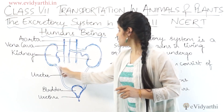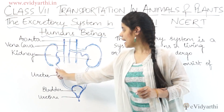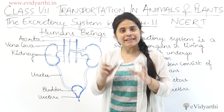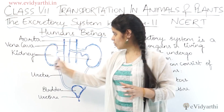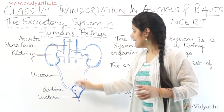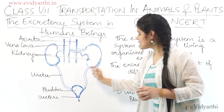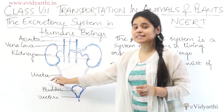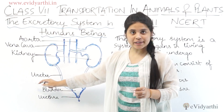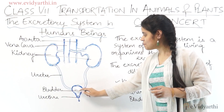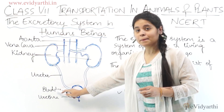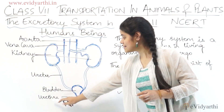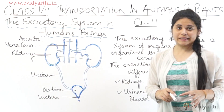Then there are two kidneys visible in the diagram. The pipe-like structure connecting them is the ureter, and then we have the bladder and the urethra.